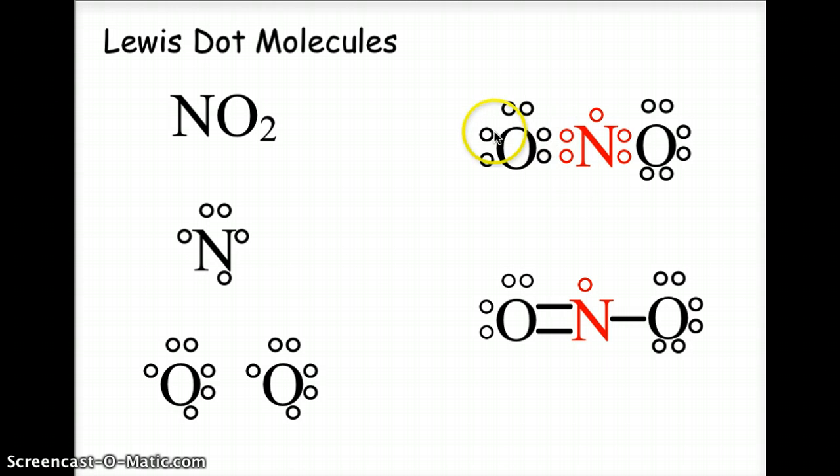And so, what we end up with here is oxygen double bonding to the nitrogen on one side, and the other oxygen single bonding to nitrogen on the other side, and that leaves that one extra electron on the nitrogen, which means it is not going to follow the rule of octet.